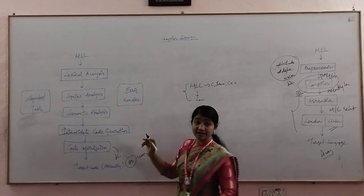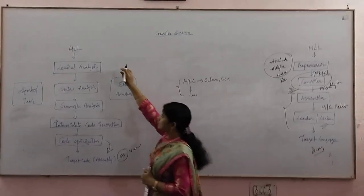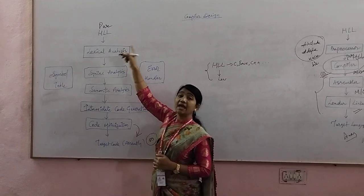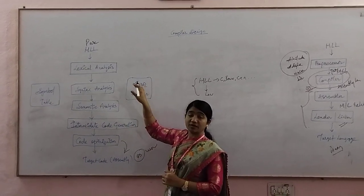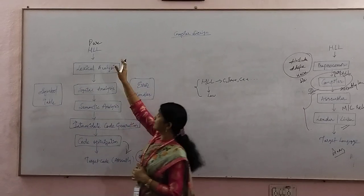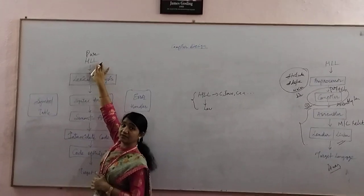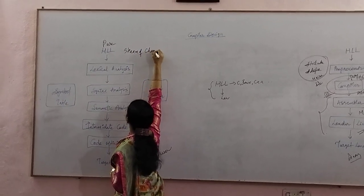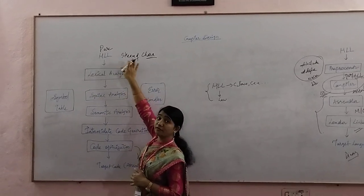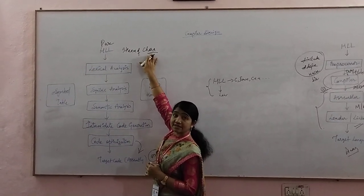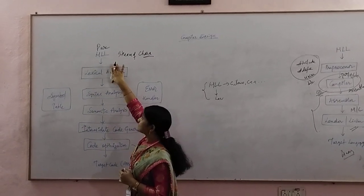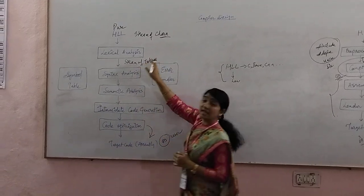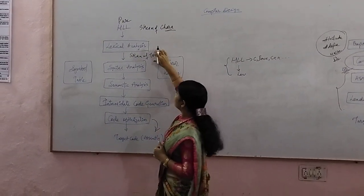The pure high level language received from the preprocessor means we cannot find any hash include or hash define statements — those are removed, and whatever files need to be included are included. We get pure high level language, which is in the form of a stream of characters. This stream of characters is given to the lexical analysis phase, and this lexical analysis phase converts that into a stream of tokens, also called stream of lexemes.